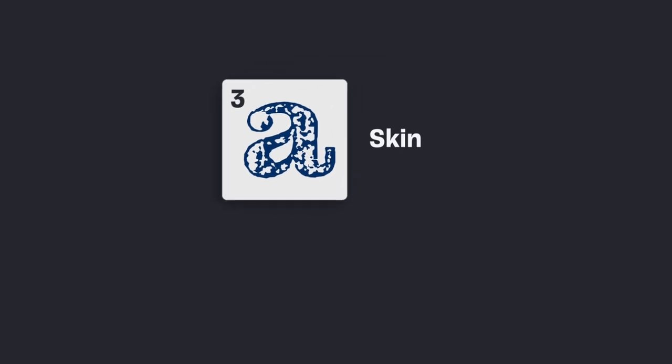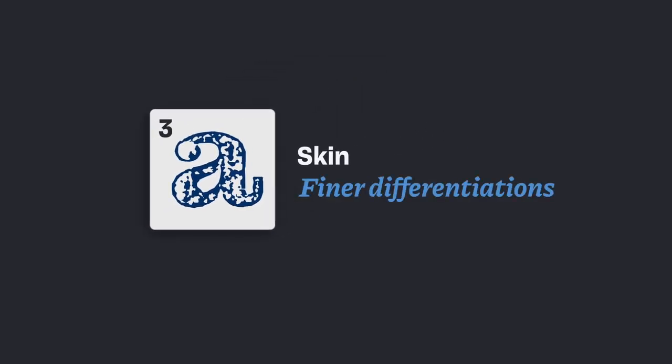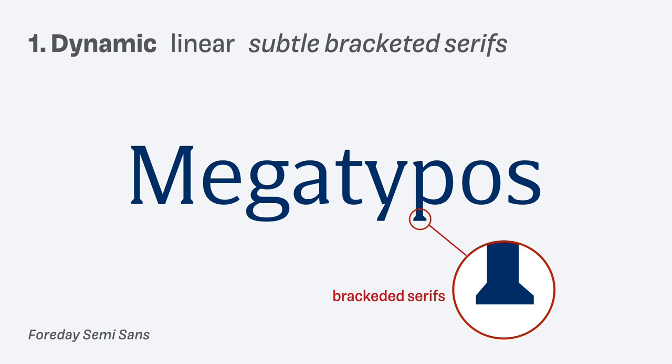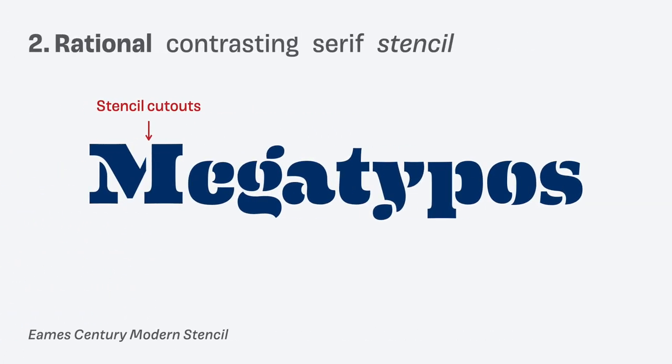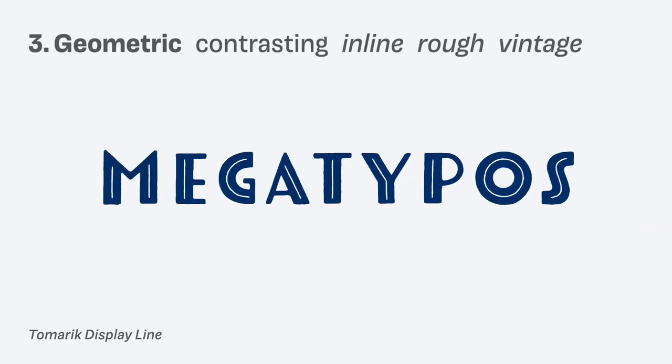One thing is still missing: the skin — which describes the finer differentiations. How the serifs are shaped, like bracketed and very subtle, or if it has a decorative feature like a stencil style, or maybe an inline style, rough or vintage. You can add any tag to it that describes it better. This makes it so much easier to describe what you're looking for, what you want, what interests you, and what fits your project.